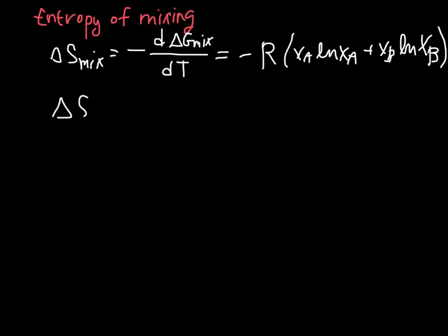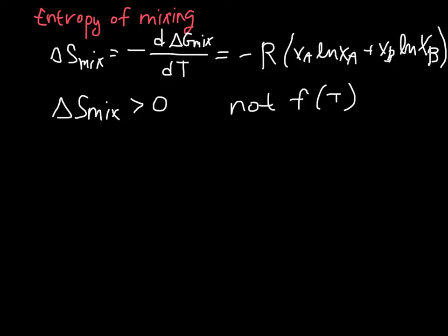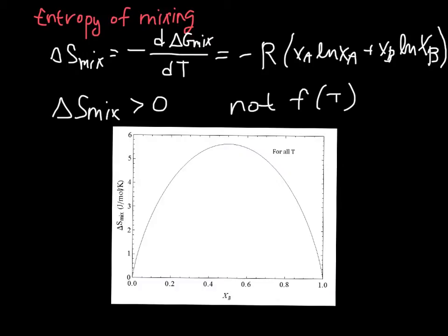So the entropy — the number of possible configurations in a system — always goes up when you mix. Another thing to note is that this is not a function of temperature; there's no T in the expression. This expression should look familiar from when we derived configurational entropy — it's actually the exact same thing, and that's not a coincidence. The plot of delta S mixing as a function of composition is symmetric, and it applies for all temperatures for an ideal solution.